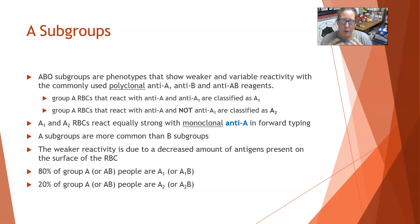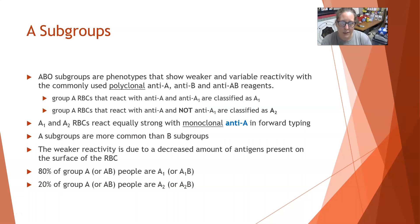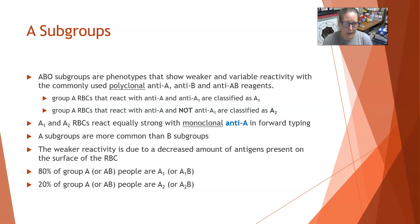We're going to start with A subgroups because they were the first that were discovered and they're the most prominent. Group A red cells that react with polyclonal anti-A and also with anti-A1 lectin are classified as A1 blood group. Group A red cells that react with anti-A but do not react with anti-A1 lectin are classified as A2. A1 and A2 red cells will react equally strong with monoclonal anti-A for typing — your normal anti-A reagents.